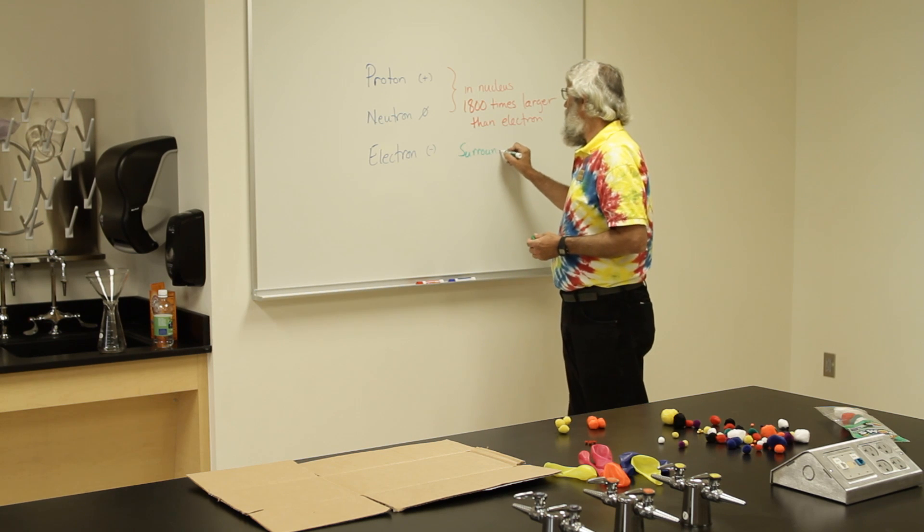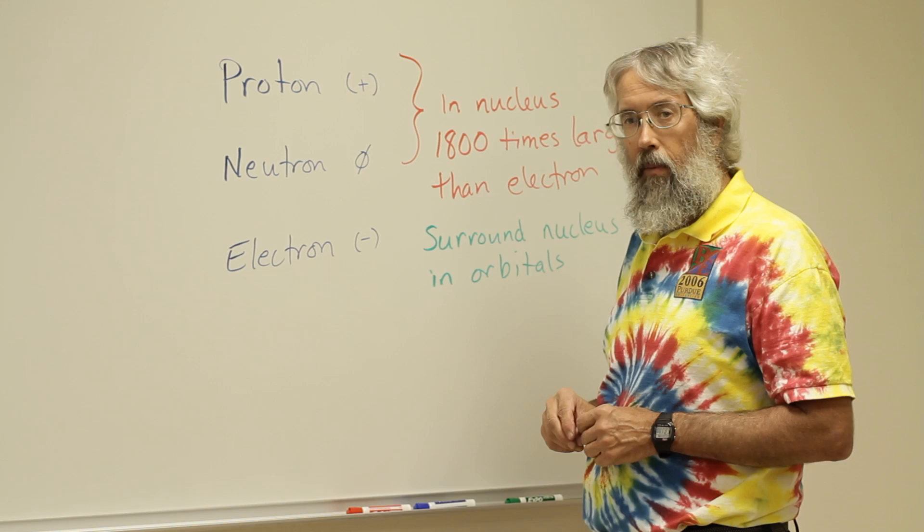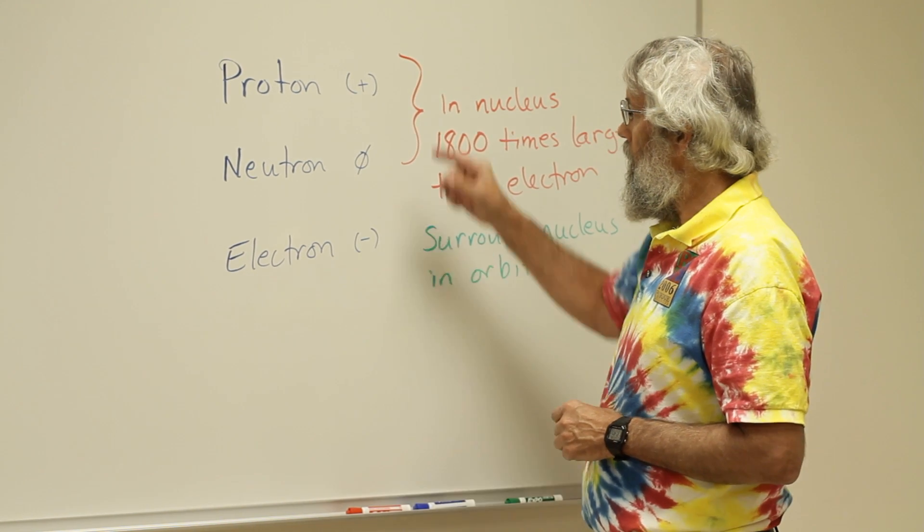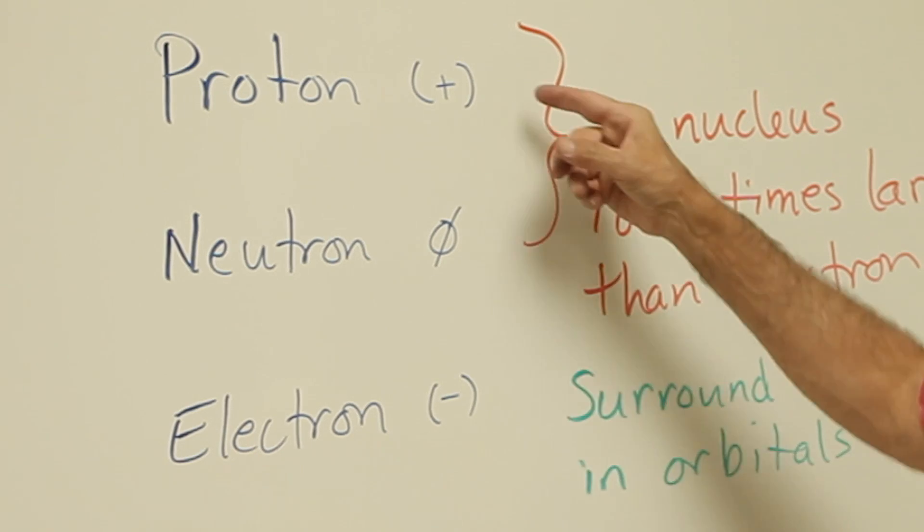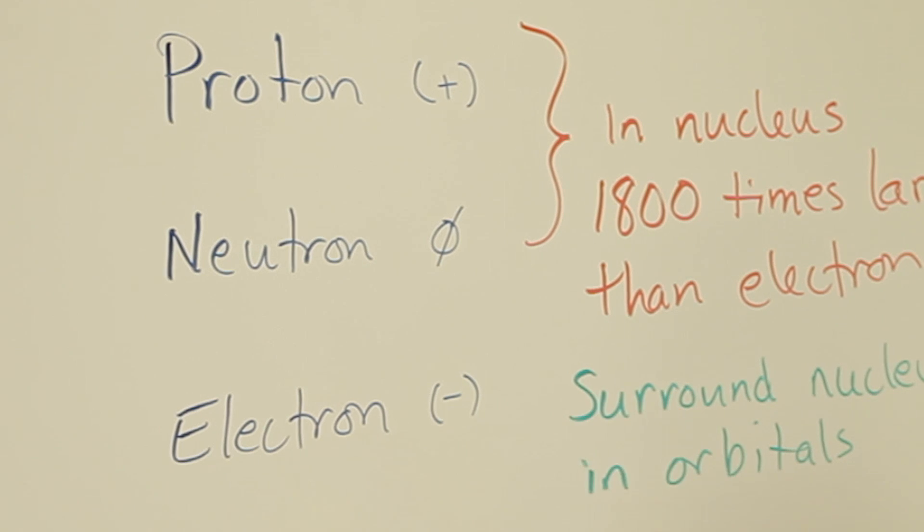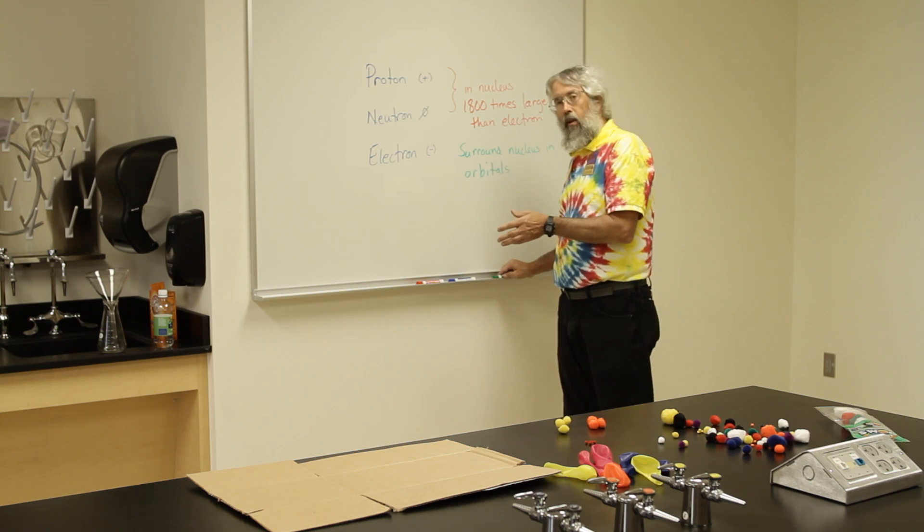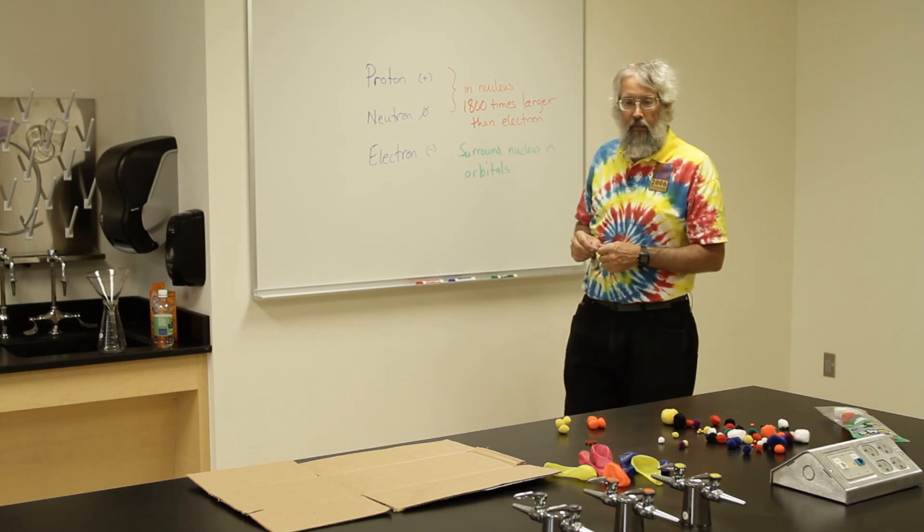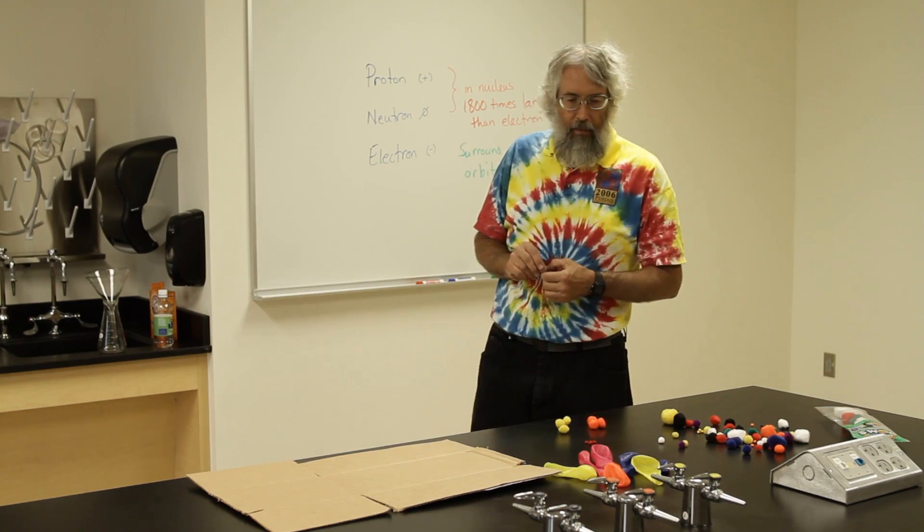A neutral atom is one that has the same number of protons and electrons so that the charges will balance out, add up to give us zero. Now that we know what makes up the atom, let's see how we can possibly build one.